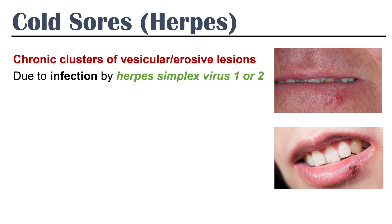They are due to infection by herpes simplex virus 1 or 2. We used to learn that maybe one of these viruses causes oral herpes and one of them causes genital herpes, but really they can both cause cold sores or oral herpes.